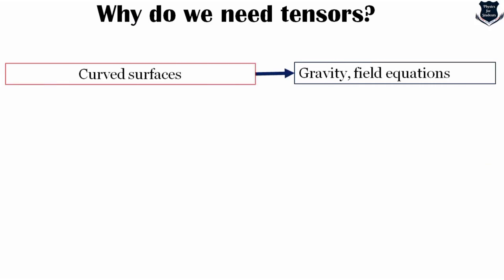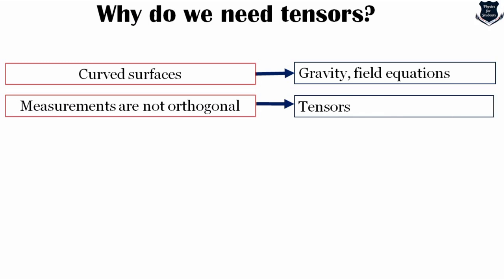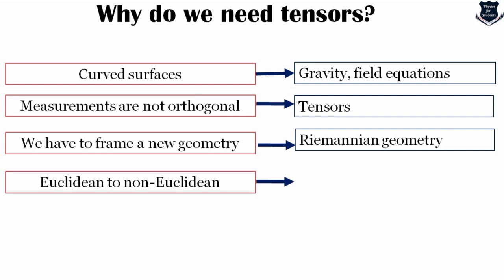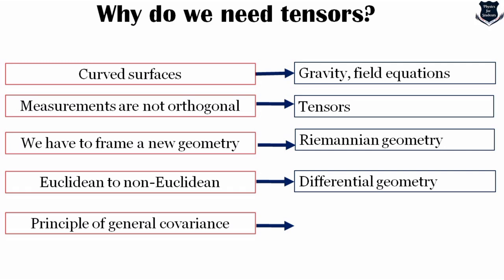If we are dealing with curved surfaces, then gravity is defined through field equations. If the measurements are not orthogonal — as is the case for a curved surface — we need tensors so that even if the basis vectors are changing, we can still calculate in a predictable manner. We have to frame a new geometry for this totally new kind of curved spacetime, not like the flat spacetime of special relativity. This is called Riemannian geometry — we are moving from Euclidean to non-Euclidean geometry, and for this we need differential geometry.